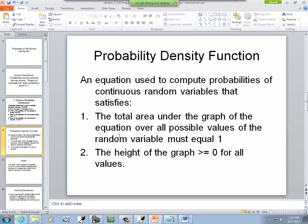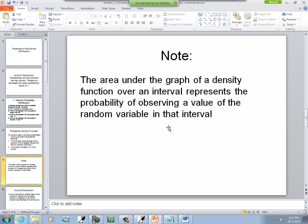Well, again, we said area ties directly to probability, and all probability adds up to 100%, or 1. Well, number 2, the height of the graph is greater than or equal to 0 for all values. You can't have negative probabilities. So that kind of makes sense. Now, here is just to really emphasize that the area under the graph of a density function over an interval represents a probability of observing a value of the random variable in that interval. So, again, area ties directly to probability.